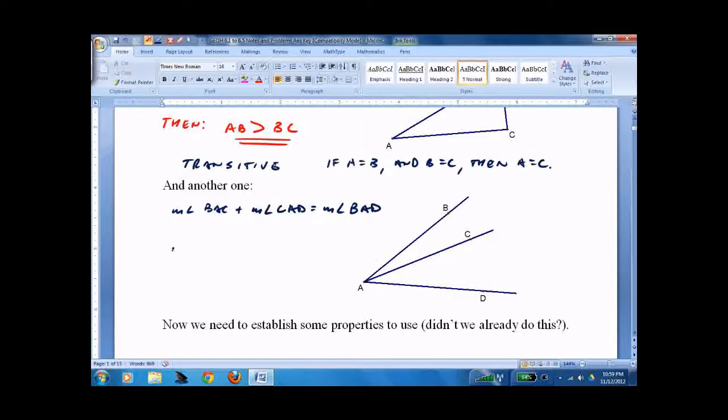Therefore, measure of angle BAD is greater than measure of angle BAC, and measure of angle BAD is greater than measure of angle CAD. And this is called the sum is greater than the parts.